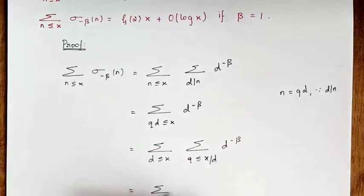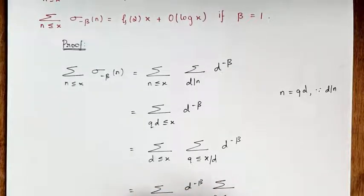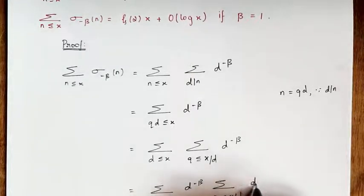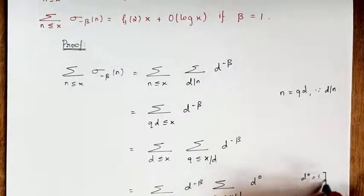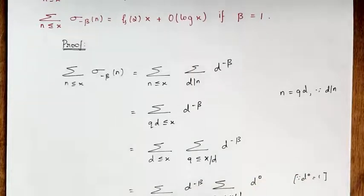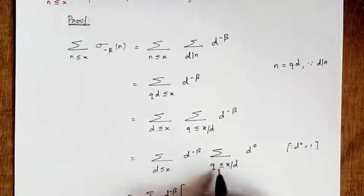Next I am going to take the d power minus beta outside, so I get sum of d less than or equal to x of d power minus beta into sum of q less than or equal to x by d of 1. Here we have 1, so I can write this as d power 0. For using the Euler asymptotic formula I take d power 0, since any number power 0 equals 1. This equals sum of d less than or equal to x of d power minus beta, and for the inner sum I am going to use the Euler asymptotic formula.